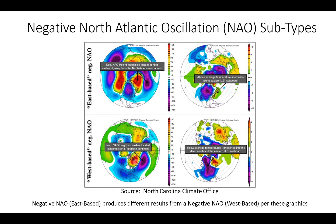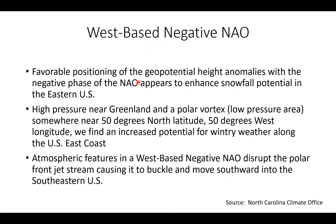With a west-based negative NAO, you've got that strong upper-level ridging moving into Greenland and extending even further west with the ridge axis. You get much colder temperatures across the eastern United States and across the southern U.S. with those higher height anomalies further west of Greenland. Look at the temperature anomalies with a west-based NAO — much more extensive cold air funneling into the central and eastern United States below average temperatures coming straight down from the Arctic and Canada into the U.S. It really makes a difference where that upper-level ridge positions itself.